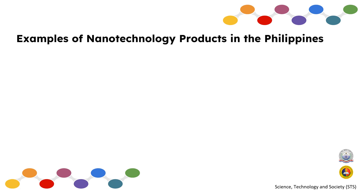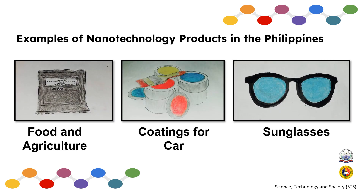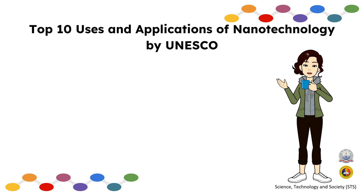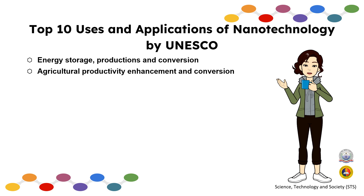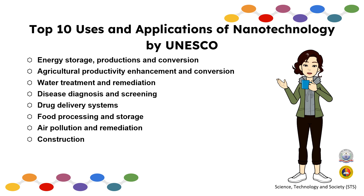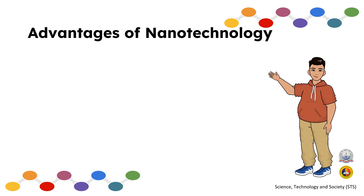Nanotechnology is also used in food and agriculture, coatings for cars, and sunglasses. These are the top 10 uses and applications of nanotechnology as determined by UNESCO: Energy Storage, Production and Conversion; Agriculture Productivity Enhancement; Water Treatment and Remediation; Disease Diagnosis and Screening; Drug Delivery Systems; Food Processing and Storage; Air Pollution and Remediation; Health Monitoring; and Vector and Pest Detection.